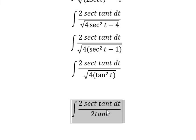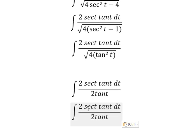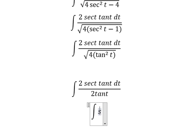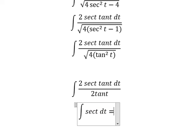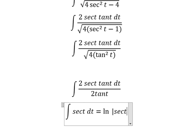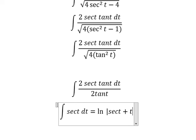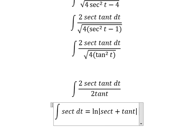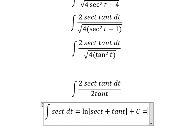Now we need to simplify, and you get secant of t dt. The integration of this gives us the natural log of the absolute value of secant of t plus tan t, and we add the constant C.